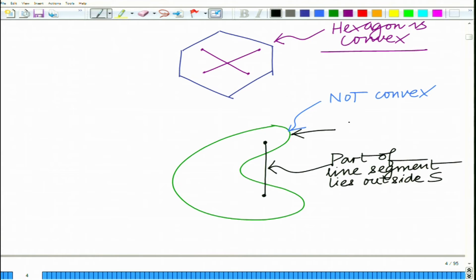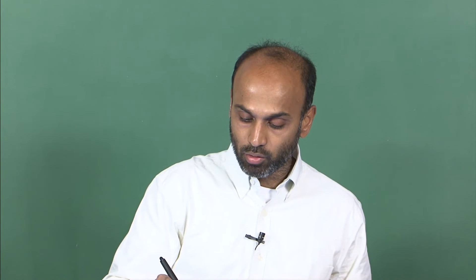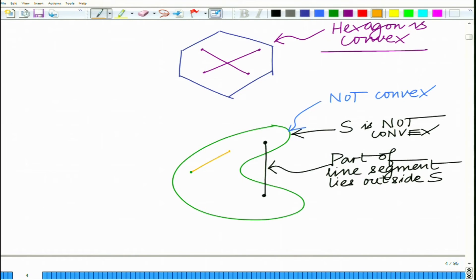On the other hand, if you have a non-convex region and this is your set S, then S is not convex. If you take two points and join them, you see that part of the line segment lies outside the set S — the line segment is not entirely contained. Remember, the entire line segment has to be contained in S, and that has to be true for any set of points in S.